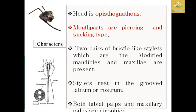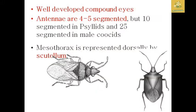They have two pairs of needle-like stylets which are modified mandibles and maxillary stylets. The stylets rest in the grooved labium or rostrum. Both labial palps and maxillary palps are said to be atrophied. They have well-developed compound eyes and the antenna is four to five segmented.